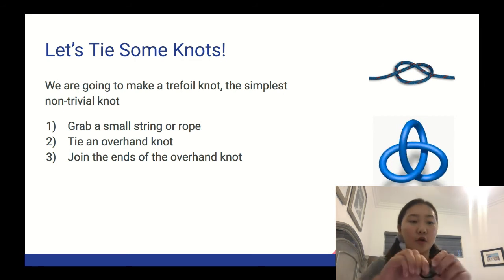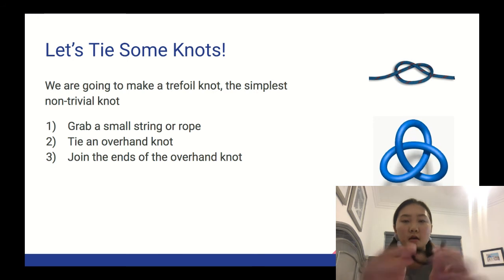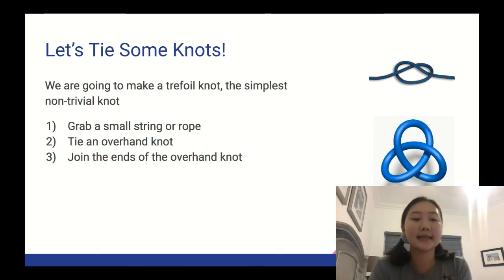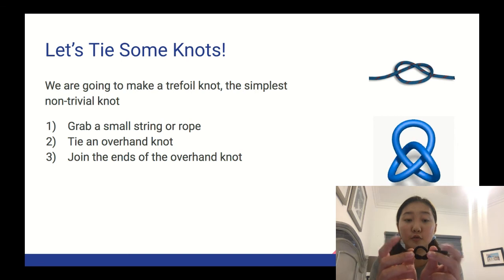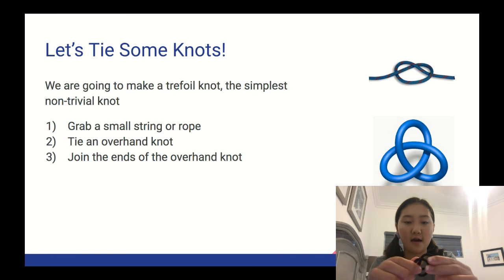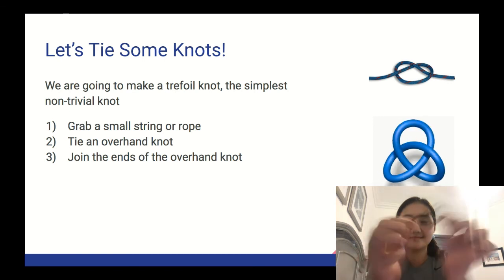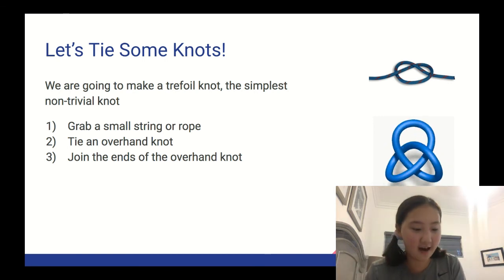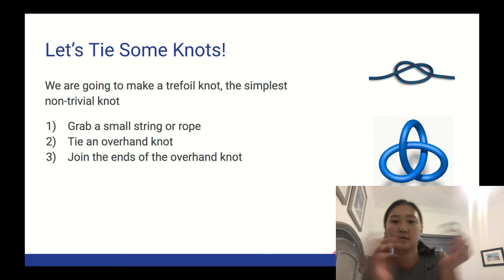Okay, so then secondly, you tie an overhand knot, like a pretzel knot, just like this. And lastly, you join these two loose ends together. Imagine that they're fused together, and you have a trefoil knot. So it's pretty easy, and it's really good to visualize exactly what it would look like.